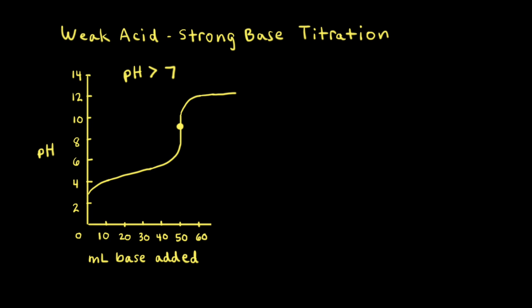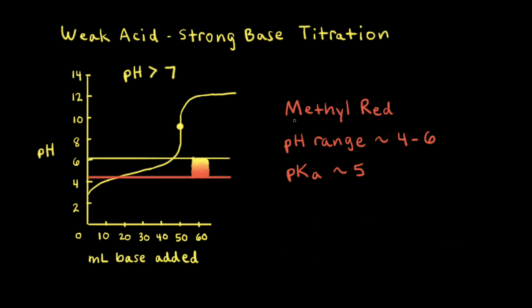Now let's see how to choose the right acid-base indicator for a titration. Our goal is to choose an indicator whose color change occurs as close as possible to the pH of the equivalence point. For a weak acid–strong base titration, the equivalence point occurs at a pH greater than 7. Let's look at the acid-base indicator methyl red, which has a pH range of approximately 4 to 6. So a little bit over 4, methyl red starts to change from red to orange, and then eventually to yellow by the time you hit a pH of about 6.